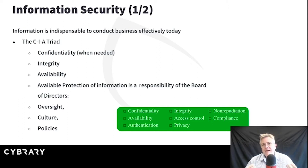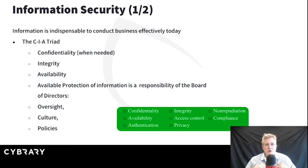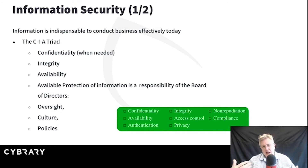Non-repudiation is a combination of integrity and authenticity. What it means is that a sender can't dispute having sent a message nor the contents of the message. If I can't dispute having sent the message, that's the authenticity piece — it definitely came from me. If I can't dispute the contents, that's the integrity piece. So non-repudiation means a sender can't dispute having sent a message nor its contents. That's framed around email here, but it can be expanded beyond that.